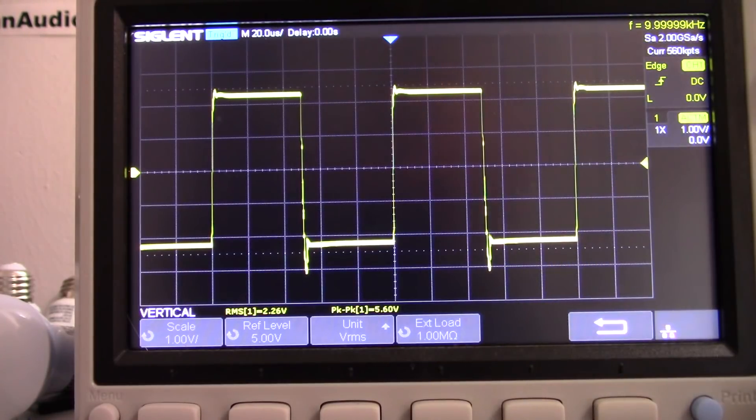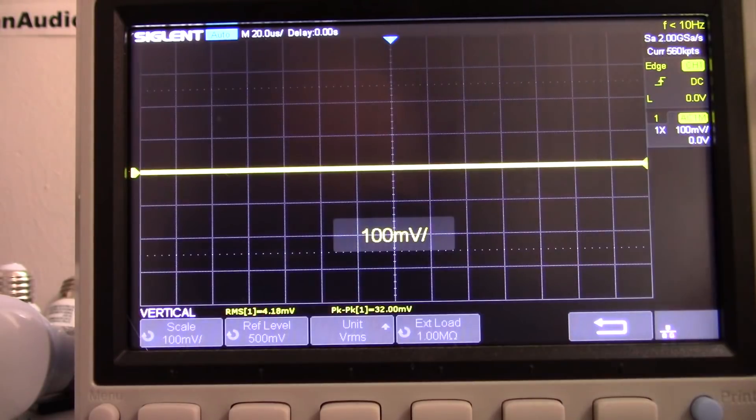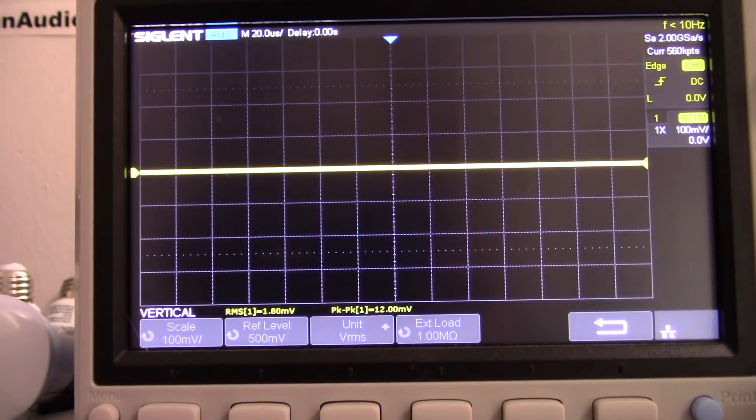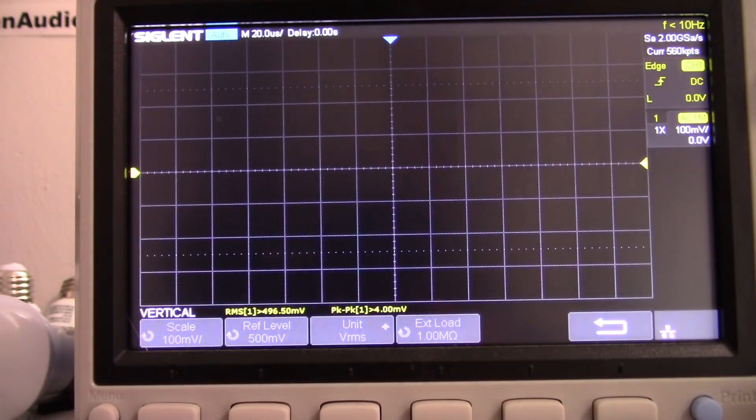Now let's check across the supply rails now. Okay. I changed the scope to 100 millivolts per division for more sensitivity. And I'm connecting right to the pins of the chip.